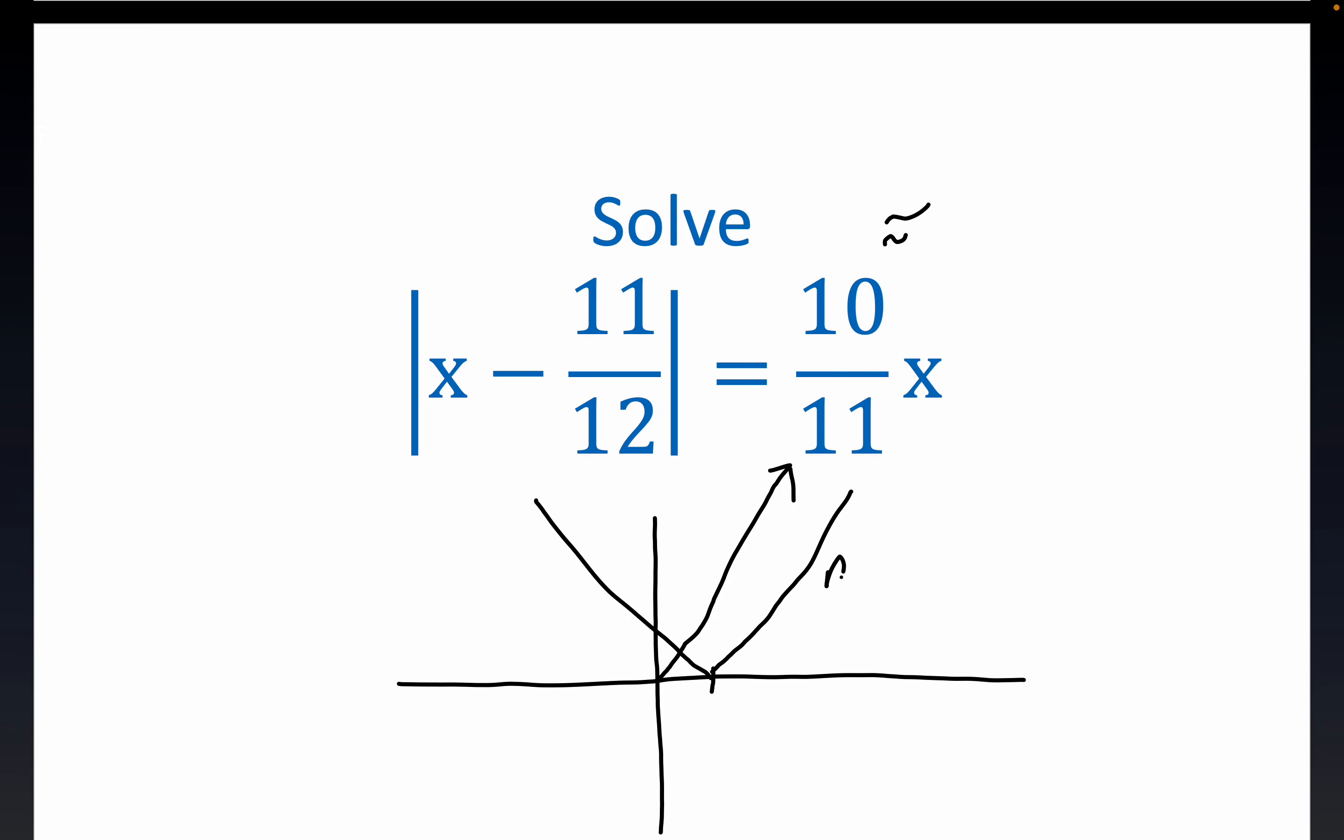So the absolute value has a slope of 1 over here, and then a slope of minus 1 over here, right? And so it actually has a larger slope than this line here. The slope of this line would be m equals 10 elevenths.